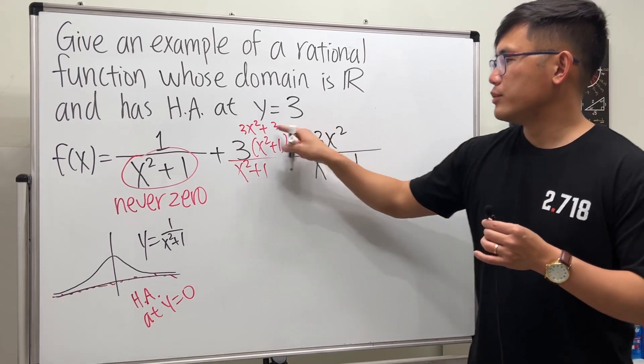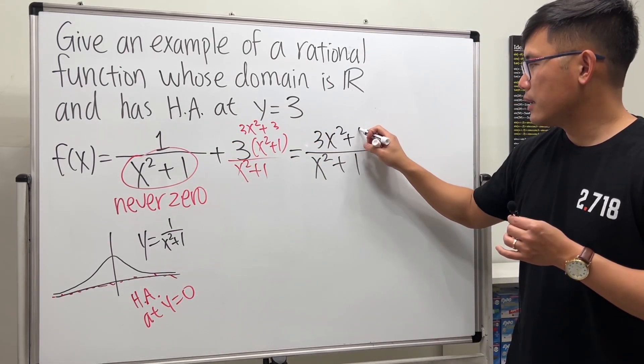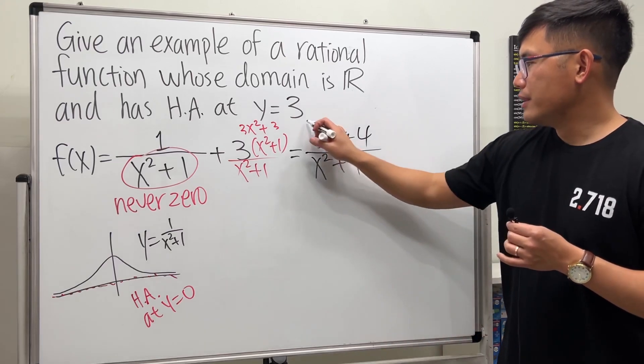This right here we get x squared plus 1 on the bottom, and this right here is 3x squared plus 3, so we have 3x squared plus 3 plus 1. So this right here will work.